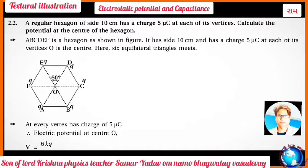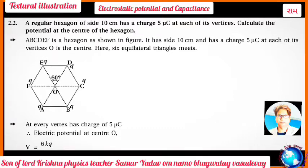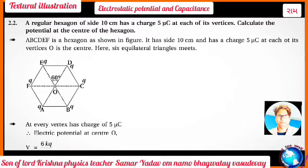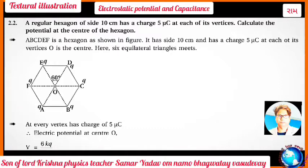A regular hexagon of side 10 centimeters has charge 5 microcoulombs at each of its vertices. Calculate the potential at the center of the hexagon. Solution: